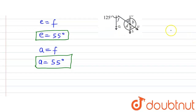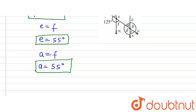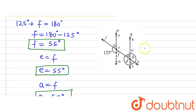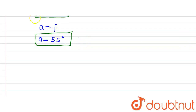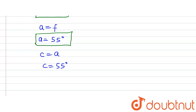It can be observed that angle A and angle C are forming a pair of vertically opposite angles. So the measure of angle C will be equal to angle A, because vertically opposite angles are equal. Therefore angle C is equal to 55 degrees.